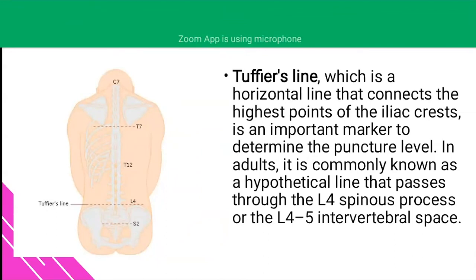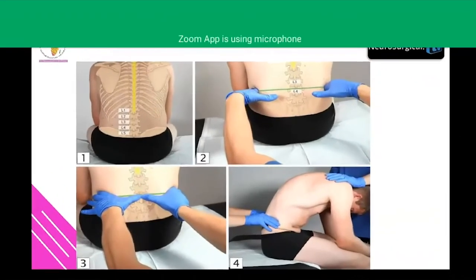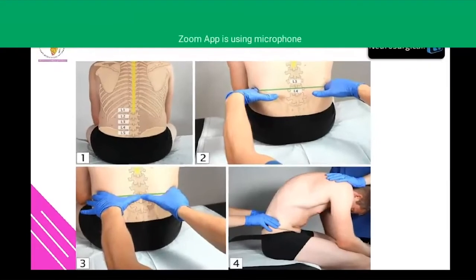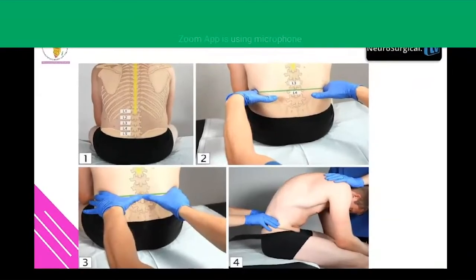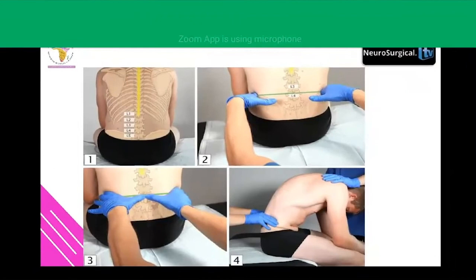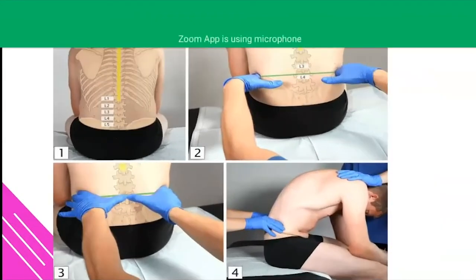Tuffier's line is a horizontal line connecting the highest points of the iliac crest — an important landmark for determining the puncture level. In adults, this line lies between L4 and L5. When the patient is seated and flexes their trunk hugging a pillow, the iliac crest corresponds to approximately L3–L4, which is where a lumbar puncture is typically performed.